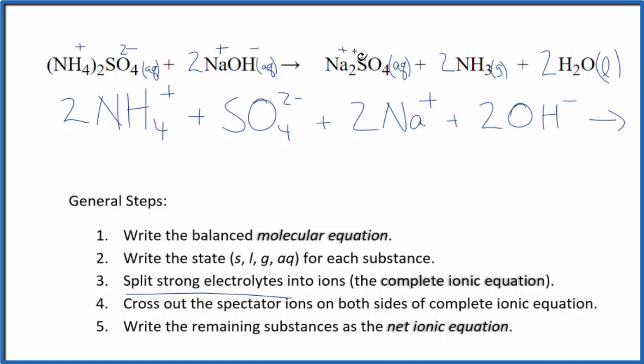For the products, we have one plus and two minus here. So we have two sodium ions, just like the reactants. And then we have the sulfate ion again.